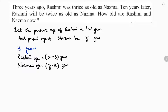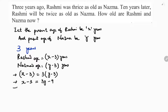Once again reading the condition: 3 years ago, Rashmi was thrice as old as Nizma. So X minus 3 equals 3 times (Y minus 3), which gives X minus 3 equals 3Y minus 9. Simplifying: X minus 3Y equals minus 6. This is equation 1.